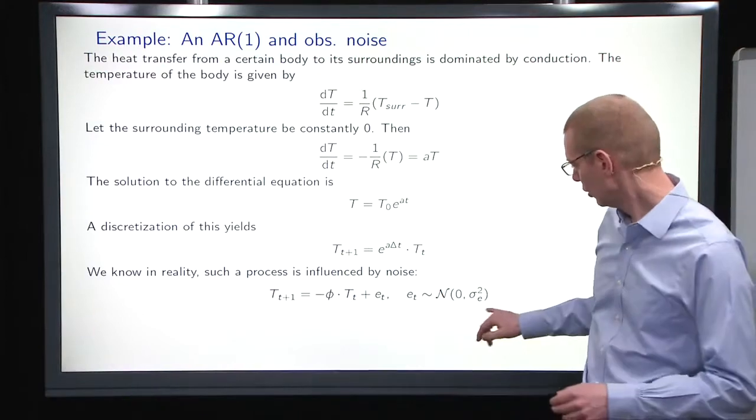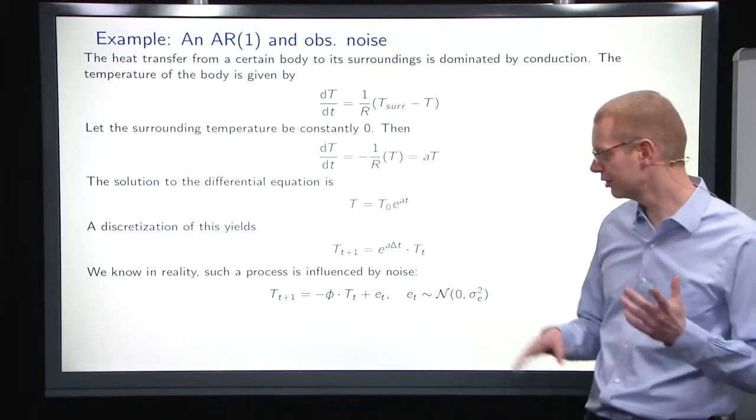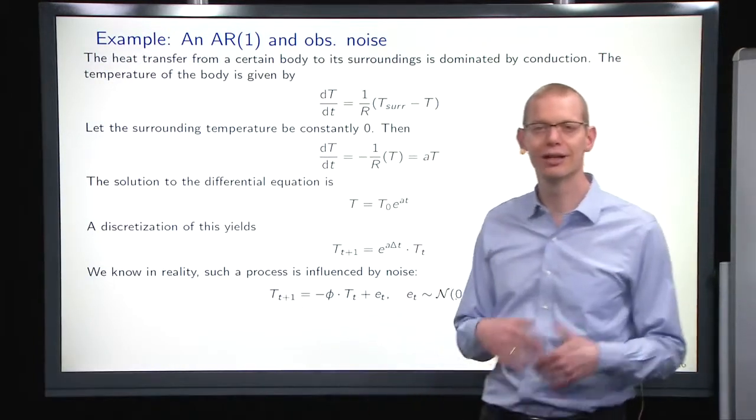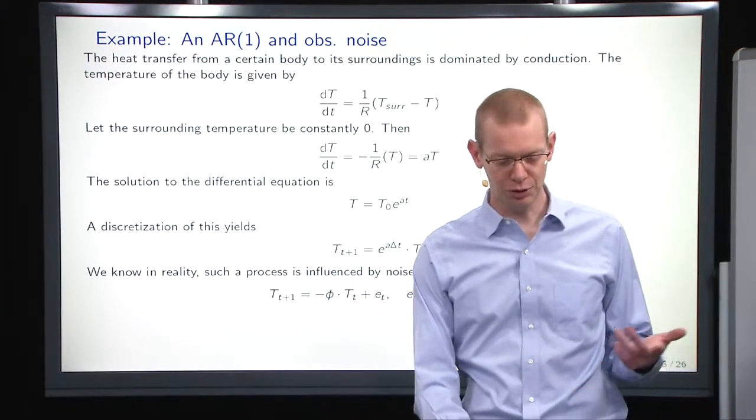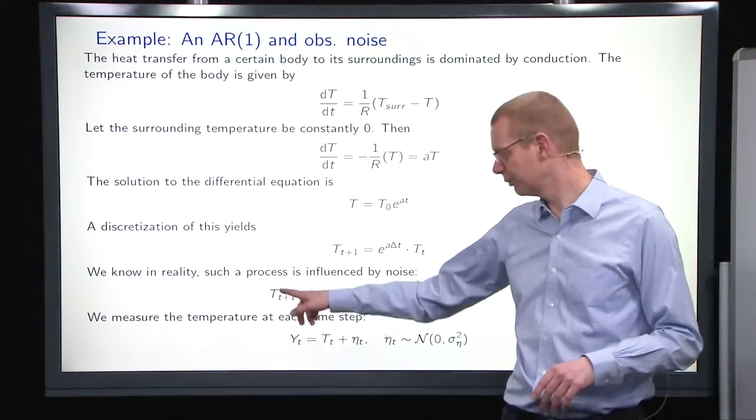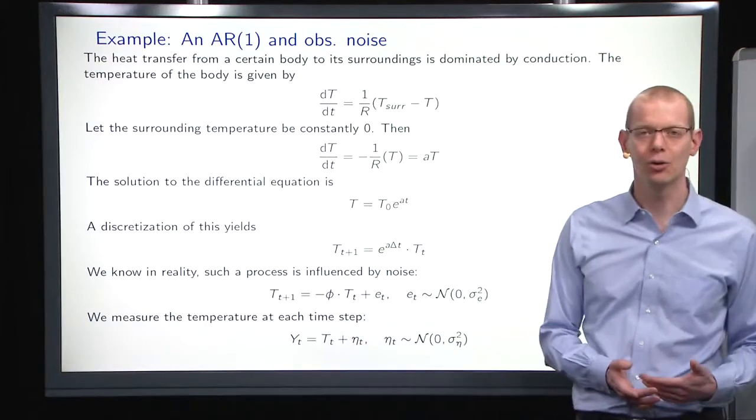In practice, you will often have some noise on top of that because you have some fluctuations or whatever. So basically what we end up here is a model that is an AR1 model. Now, in practice, when you observe temperatures, you are often not observing the temperature of the body directly, but you have it indirectly and thereby you also add some noise.